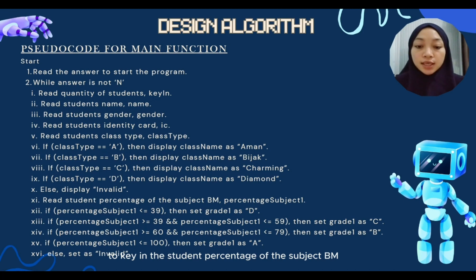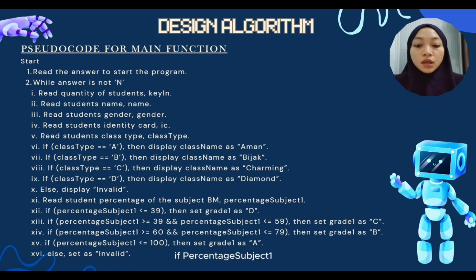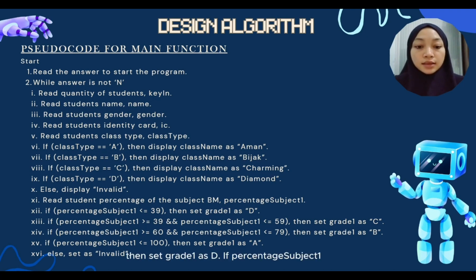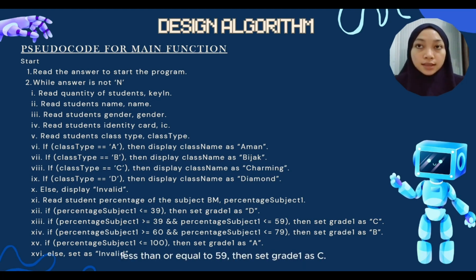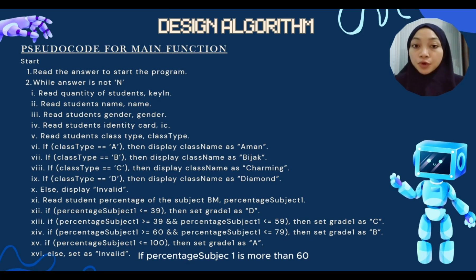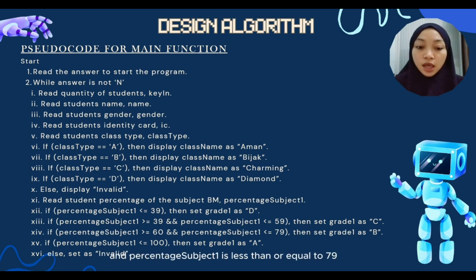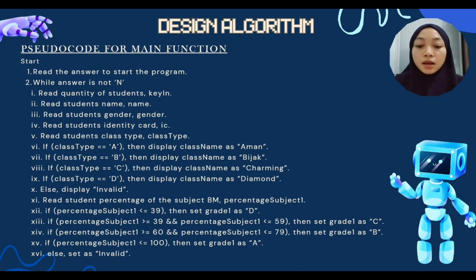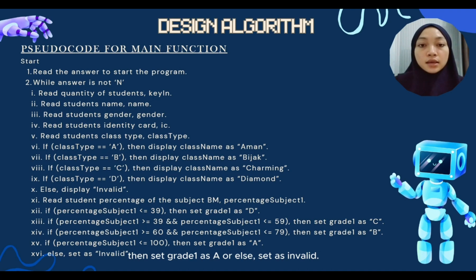Next, the system will ask users to key in the student's percentage for subject BM, which is percentage subject 1. If percentage subject 1 is less than or equal to 39, then set grade 1 as D. If percentage subject 1 is greater than or equal to 39 and less than or equal to 59, then set grade 1 as C. If percentage subject 1 is less than or equal to 100, then set grade 1 as A; otherwise set as invalid.